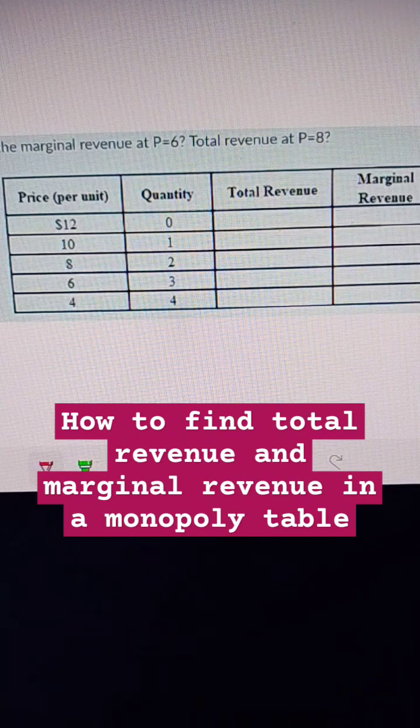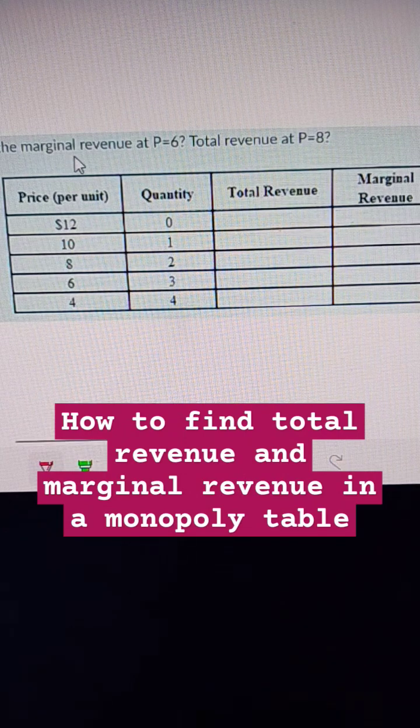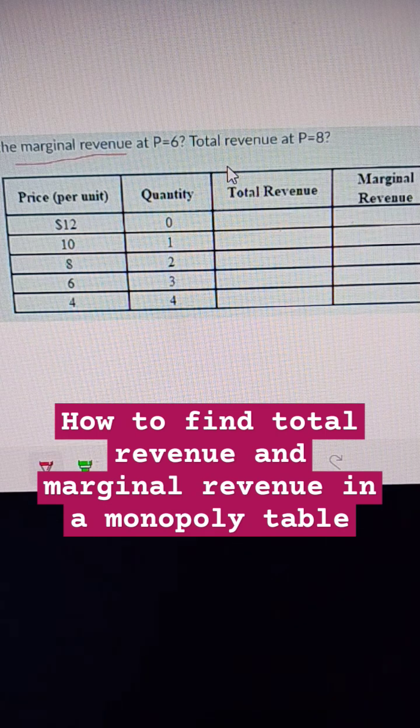Here we need to find marginal revenue and total revenue. Marginal revenue means the additional revenue. Total revenue is price times quantity.